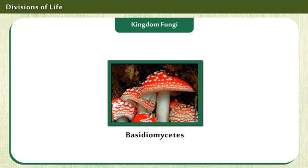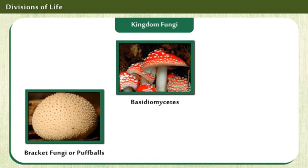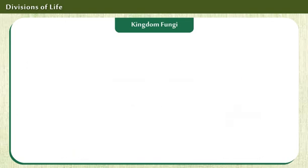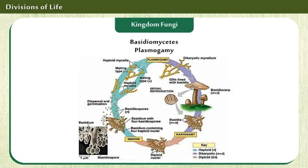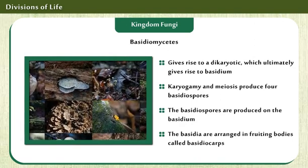Basidiomycetes are classified under Kingdom Fungi. They include bracket fungi or puffballs. The mycelium is branched and septate. Vegetative reproduction is by fragmentation. Plasmogamy is by fusion of two vegetative or somatic cells of different strains or genotypes. Some of their important features are displayed on the screen.